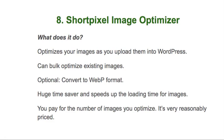Number eight is the ShortPixel Image Optimizer. I use a lot of images and while I do optimize them myself with various online optimizers, it's nice to have ShortPixel there just in case or for further optimization. It automatically reduces the file size of images you upload so they load faster. Images from free stock sites or Shutterstock can be 600 KB or up to 1,000 KB, which takes a long time to load. One thing I really like is it will convert your images to WebP format, which loads even faster, and I do that across all my sites.